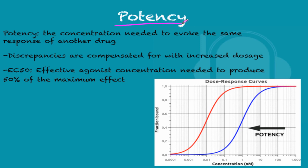Potency is the concentration needed to evoke the same response as another drug. For example, if one drug needed 50 mg to evoke a response and another similar drug needed 100 mg to evoke that same response, the first drug is more potent. The discrepancy between drugs is compensated for by increased dosage. The EC50, or effective concentration at 50%, is the agonist concentration needed to produce 50% of the maximum effect.